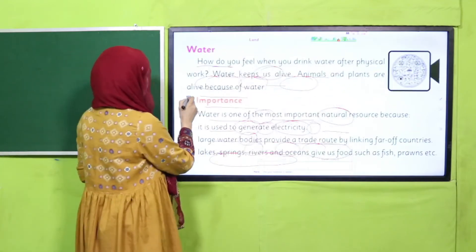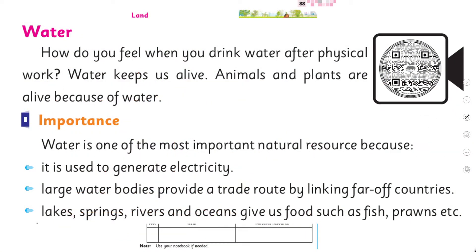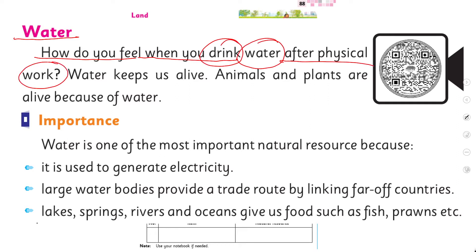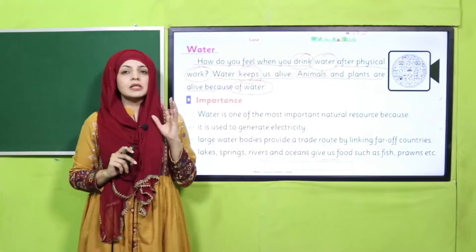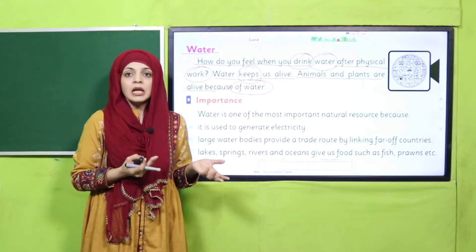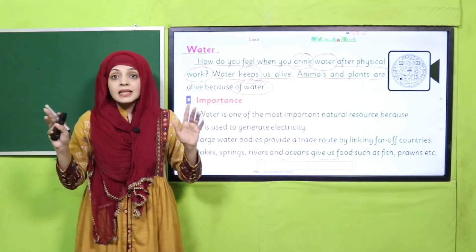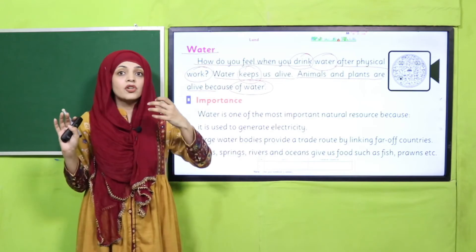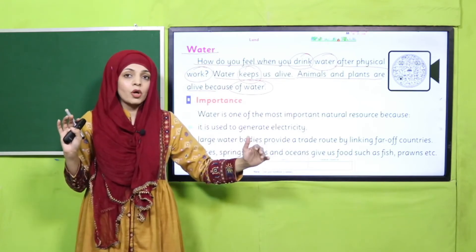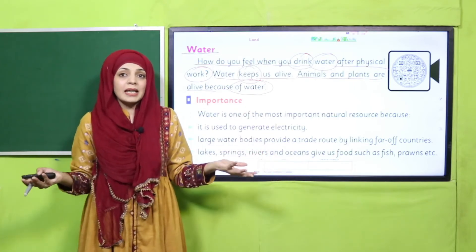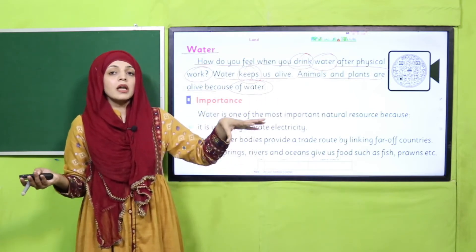Now we will move forward towards the water resource. Put your fingers where I will read. 'Water — how do you feel when you drink water after physical work? Water keeps us alive. Animals and plants are alive because of water.' My dear students, water is extremely important for our body; otherwise we will get dehydrated. Plants, animals, and human beings — everyone needs water. Without water we cannot stay alive. Water is most importantly used for drinking. Plants need water to make their food, and animals need it for drinking.